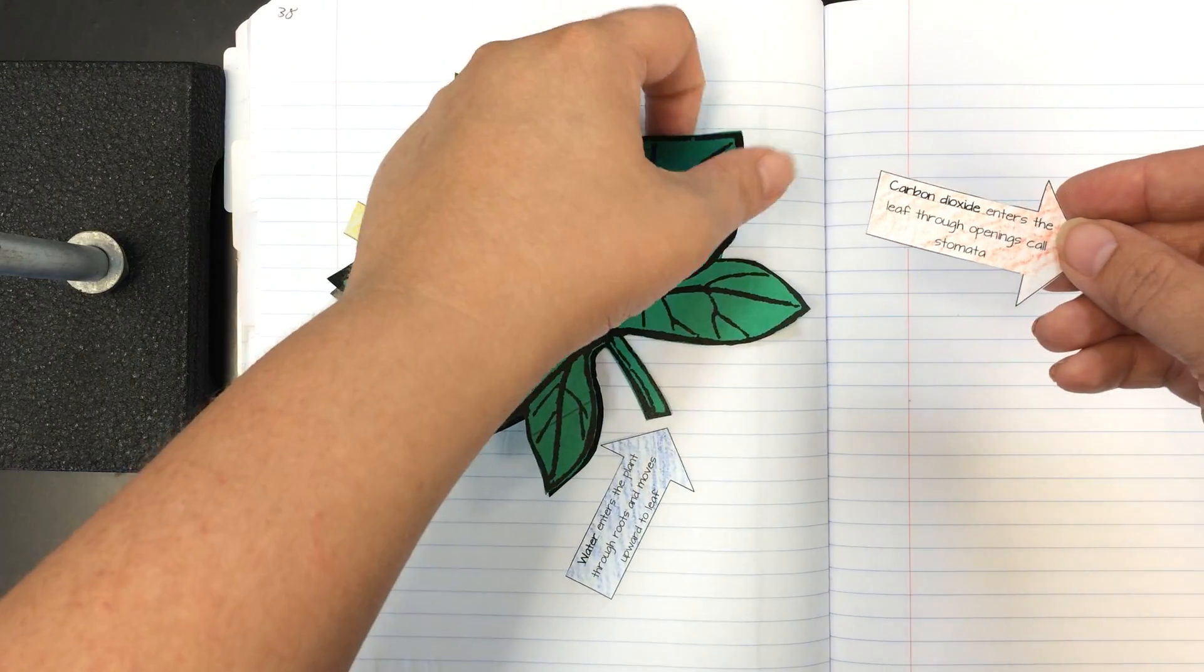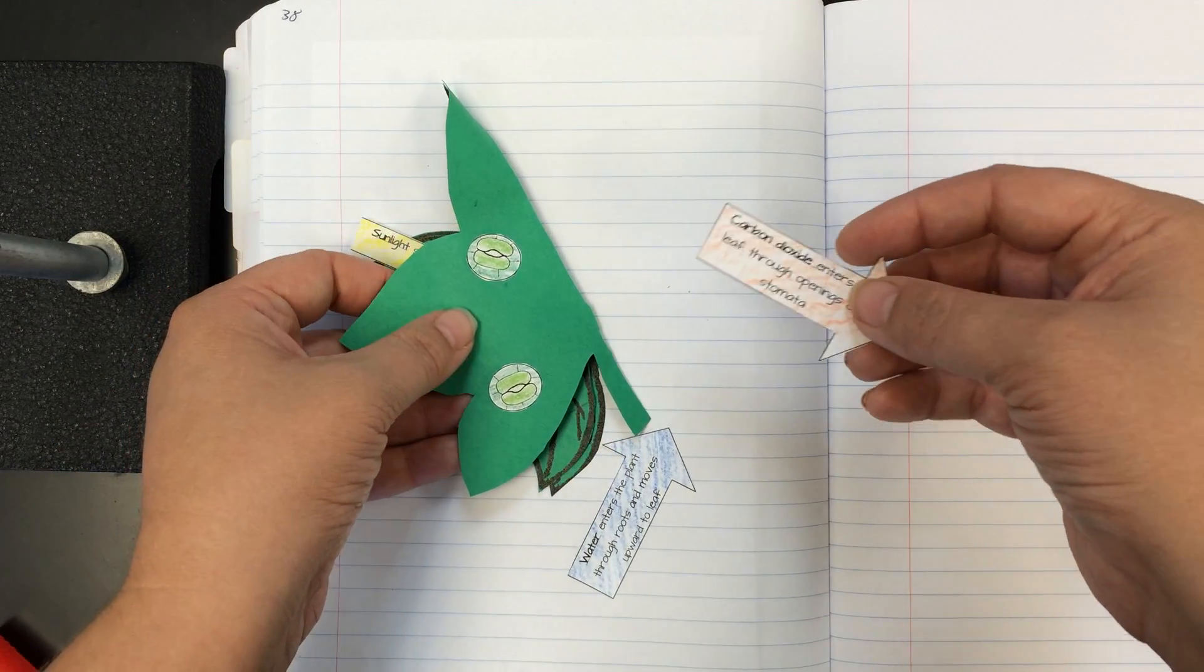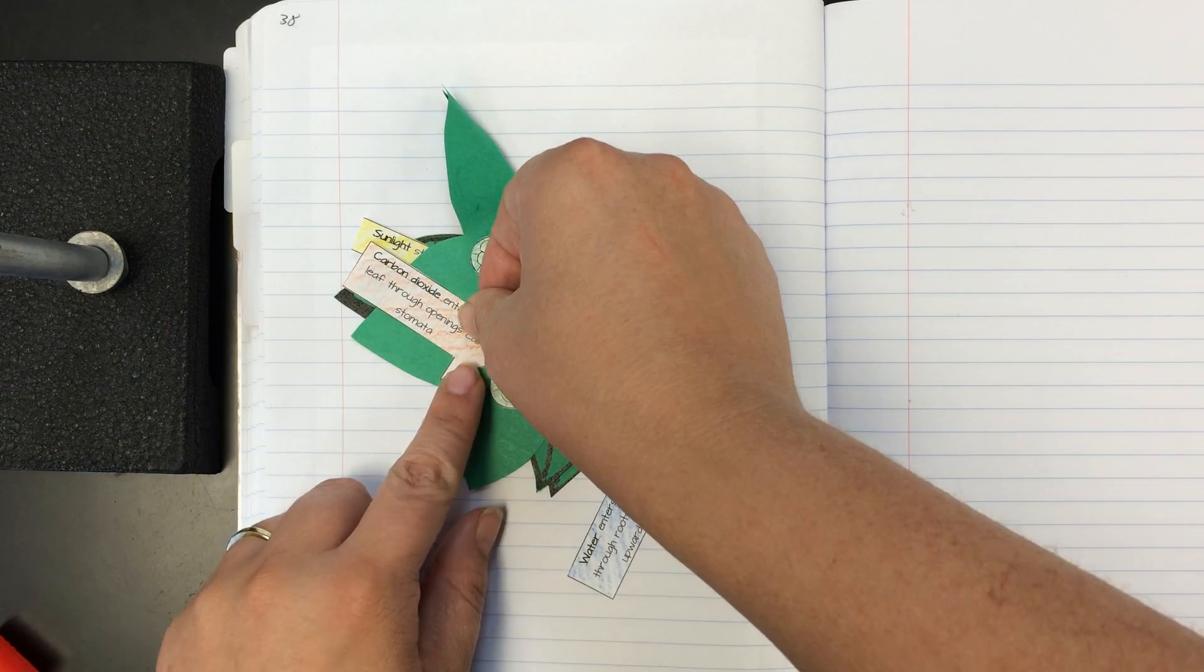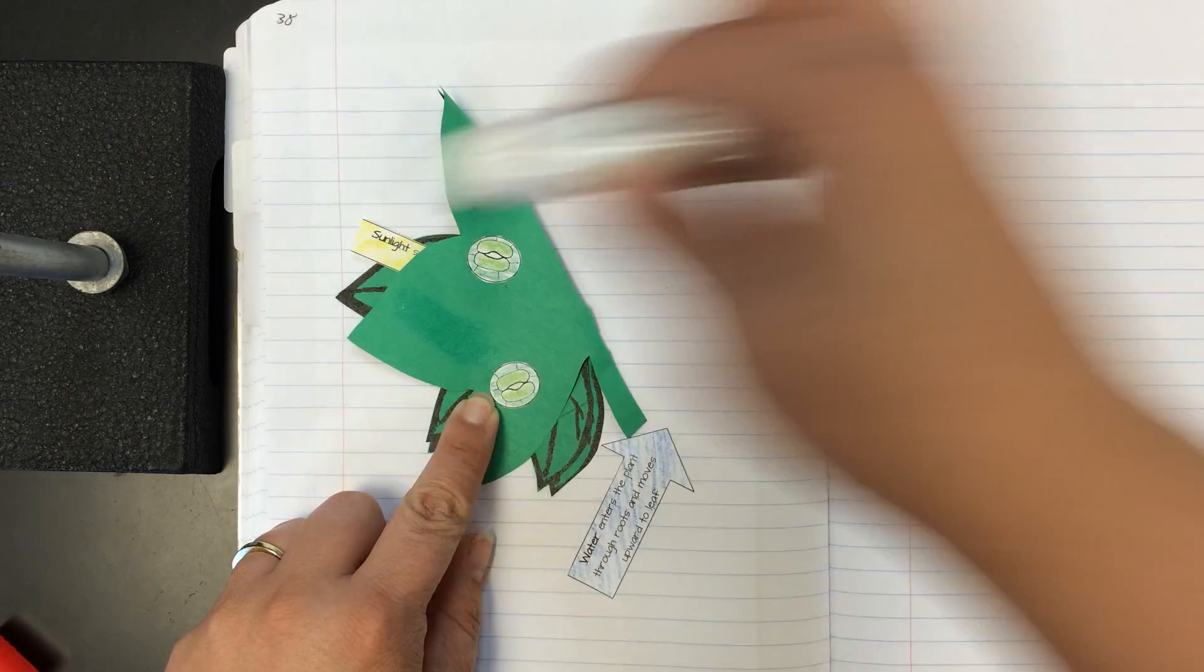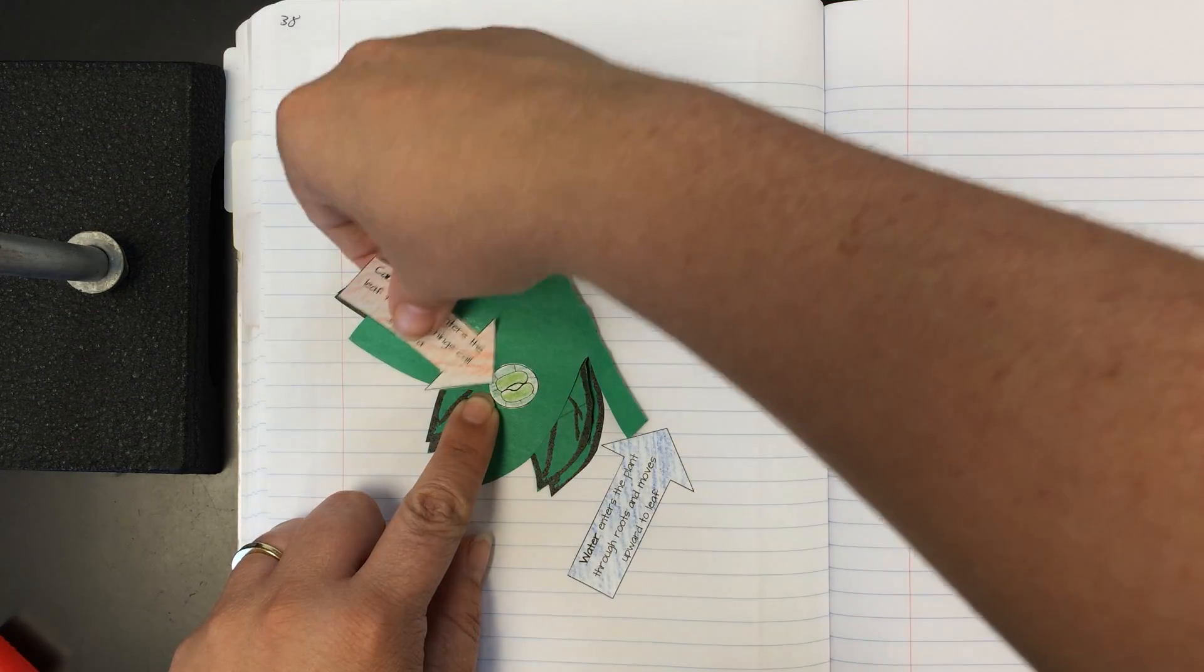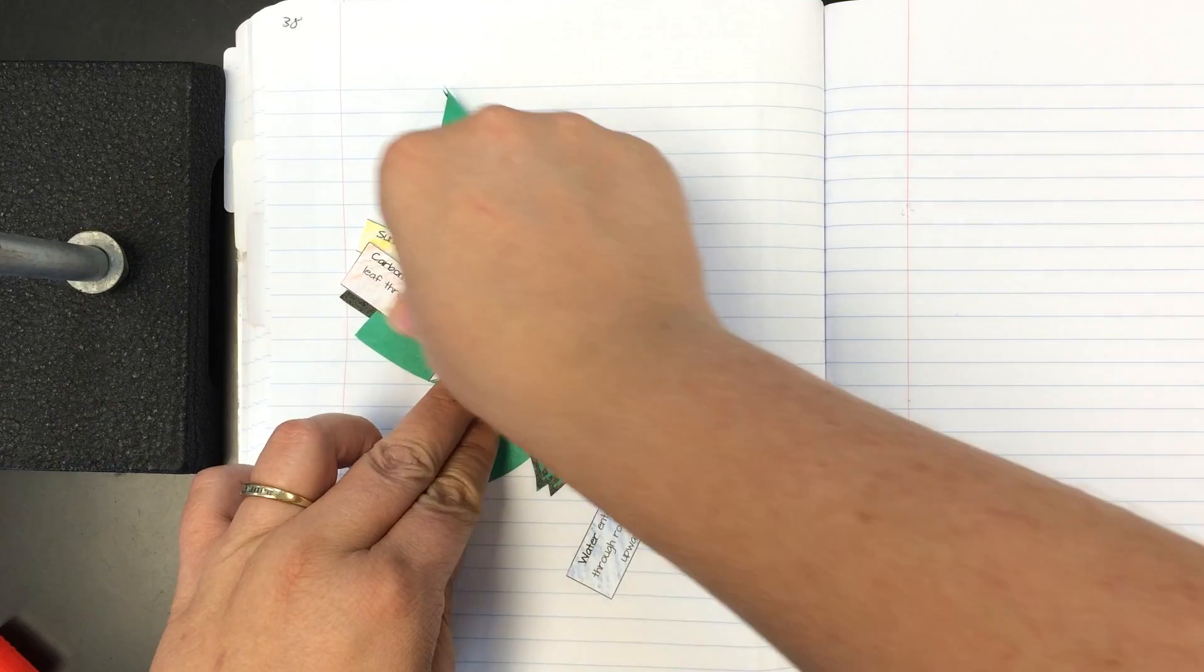So we're going to put this arrow on the underside of our leaf showing that carbon dioxide is coming in through the stomata. So I'll put a little glue down here, and my stomata arrow right here.